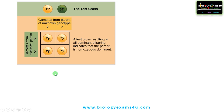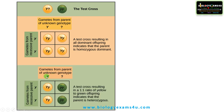Now let us take another case. If the dominant phenotype is heterozygous, that is capital Y small y, then the gametes from the recessive parent are small y small y, and gametes from the unknown genotype. If it is a heterozygous condition capital Y small y, then the offspring will be capital Y small y, small y small y, capital Y small y, and small y small y. So there are both yellow colored and green colored seeds in the offspring. The test cross ratio will be 1:1 of yellow to green, indicating that the parent is heterozygous.